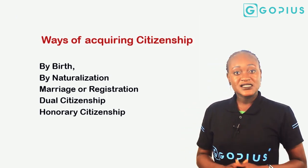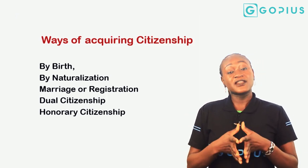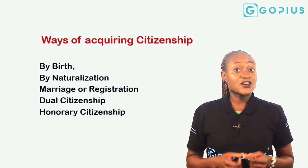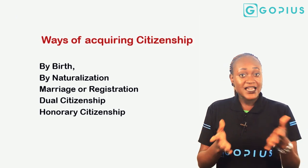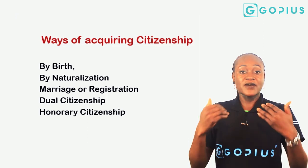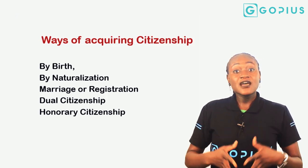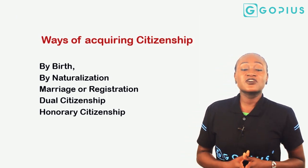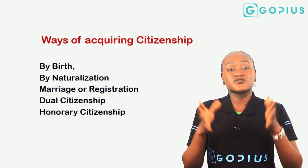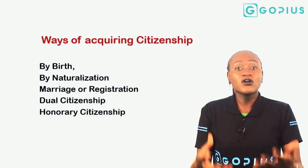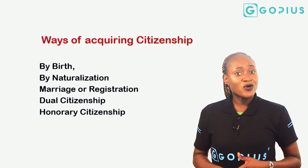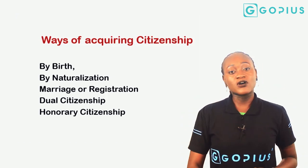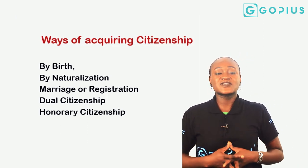It could also be by marriage. So if I am a Nigerian and I am married to an American, I have become a citizen of America — of course my citizenship as a Nigerian has not been taken away. And that also illustrates dual citizenship: I am a Nigerian citizen and I am also an American citizen by marriage. We also have honorary citizenship — maybe because of your great input or contribution to the development of the society where you live, the country can decide to award you with an honorary citizenship, not because you were born there or are resident there, but because of your contributions.